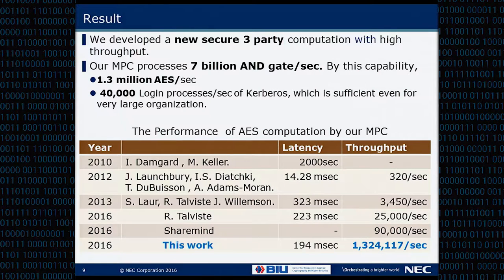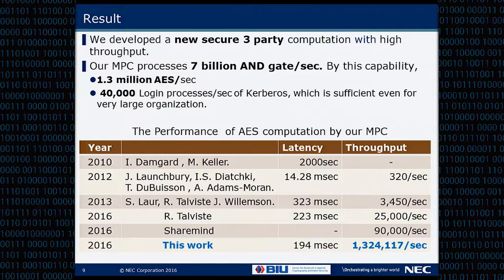From this strategy, we developed a new secure 3-party computation with high throughput. We chose 3 parties because three is a very nice number to get high throughput — we can't do it with 2 currently. Our multi-party computation processes 7 billion AND gates, giving 1.3 million AES per second, and 40,000 login processes for Kerberos. And we see that from the previous level, ShareMind also increased their throughput drastically. But among all of them, we achieve this number.